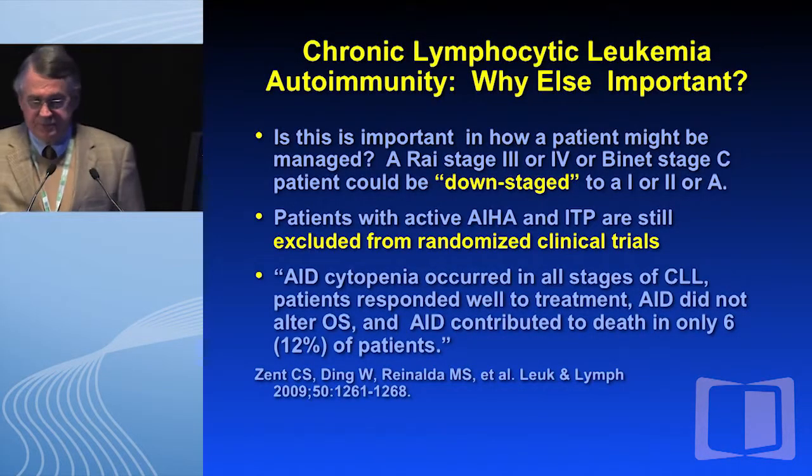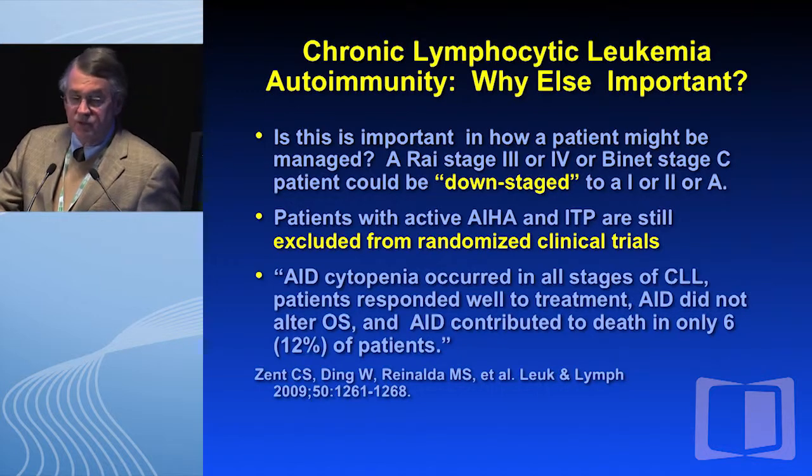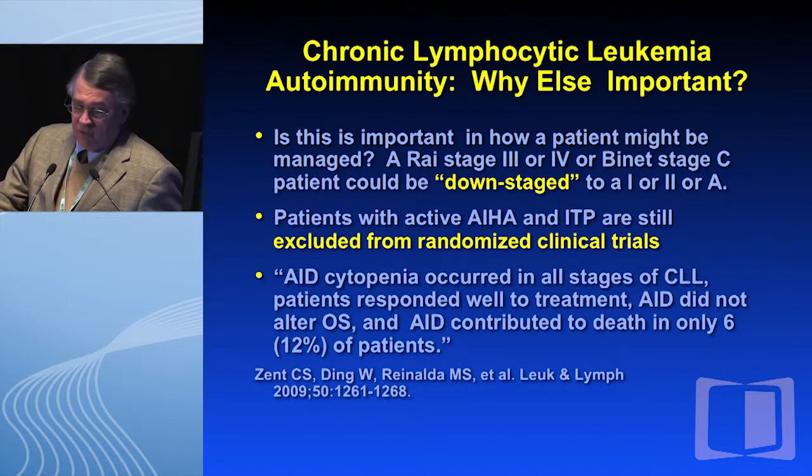Why else is this important? It matters how the patient might be managed. A Rai stage 3 or 4 or a Binet stage C patient could be downstaged to a Rai 1 or 2 or a Binet A. Patients with active autoimmune hemolytic anemia and ITP are unfortunately excluded from randomized clinical trials. Autoimmune disease cytopenia occurred in all stages of CLL and patients responded well to treatment. AID did not alter overall survival and contributed to death in only 6 patients in a paper by Clive Zent and colleagues out of Mayo in Rochester.